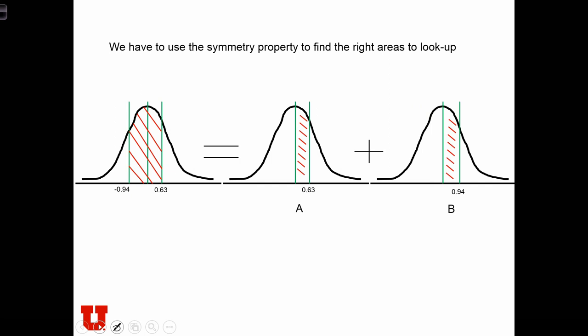Essentially, we are looking for this total area, but we're going to split it up into two partial areas. One being the area between 0 and the z-score of 0.63, and the other being the area between the z-score of 0 and negative 0.94.